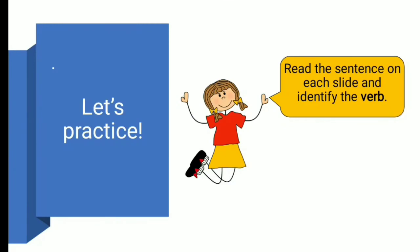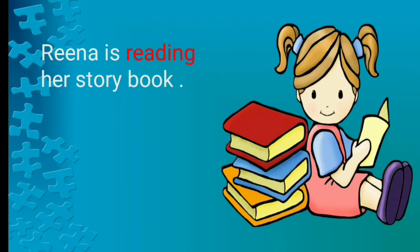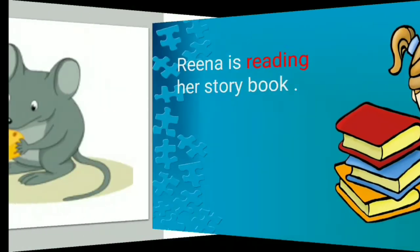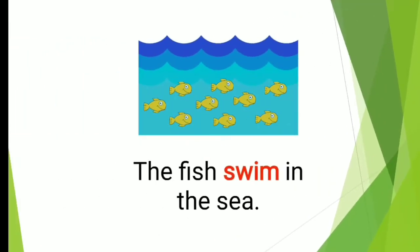Dear students, let's practice more. Read the sentence on each slide and identify the verb. Reena is reading her storybook — what is Reena doing? The verb is reading. The mouse nibbled the cheese — the verb is nibbled. The fish swim in the sea — the word swim shows an action, so the verb is swim.